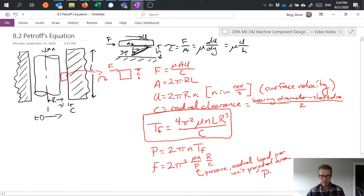So p in this sense equals W which is my load over 2RL which would be like my projected area.